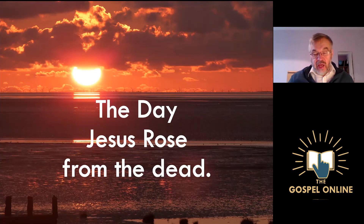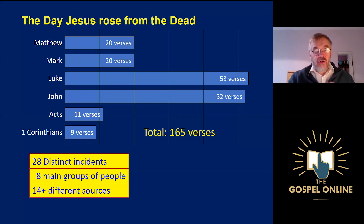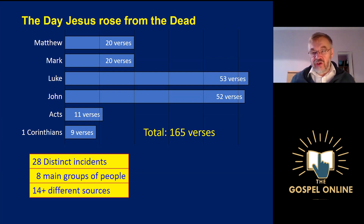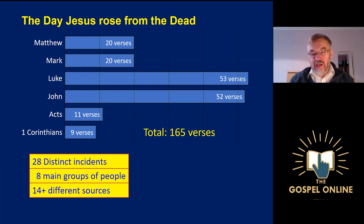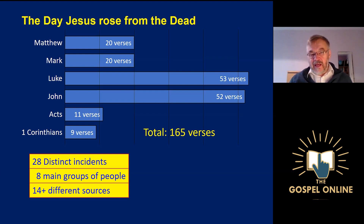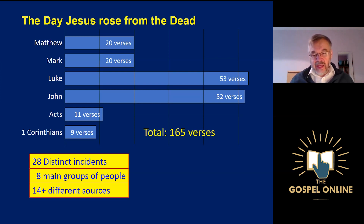The accounts of the resurrection of Jesus appear in all four of the gospels, in the Acts of the Apostles, and there's a short section in 1 Corinthians chapter 15. Altogether there are 165 verses. That sounds like it shouldn't be too difficult to put them together, but in fact there are quite a lot of complexities involved: 28 different incidents, eight main groups of people moving around, and the accounts come from 14 or more different people giving information to the writers of the gospels and the Apostle Paul. So putting things together isn't quite so simple as you might think at first sight.